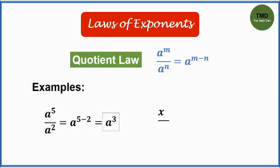Example number 2: x cubed over x is equal to x squared. The common base x is copied, then the exponents are subtracted. 3 minus 1 is 2.